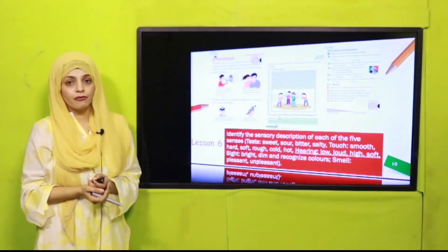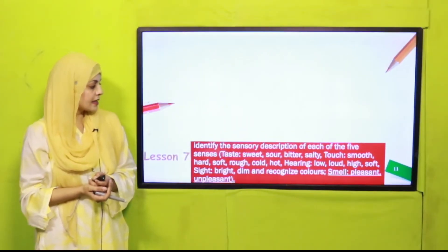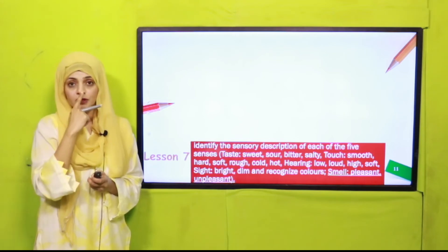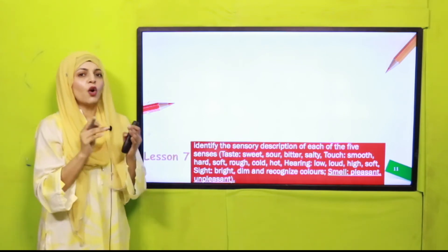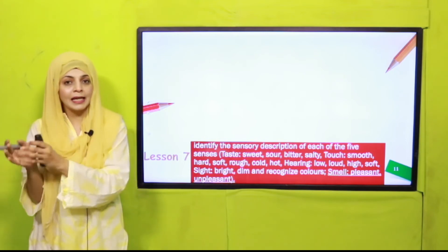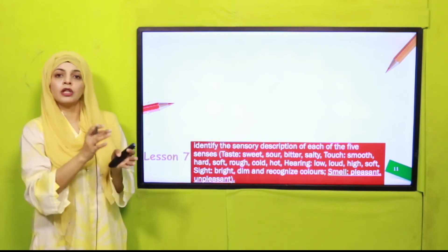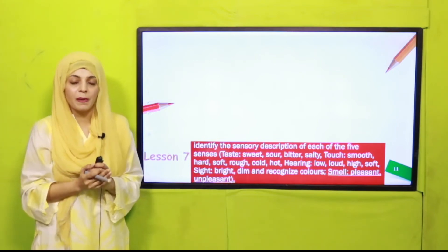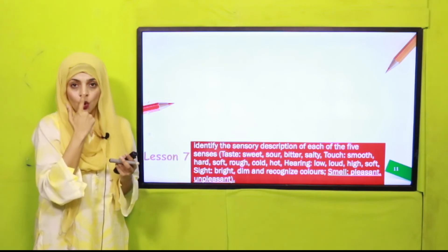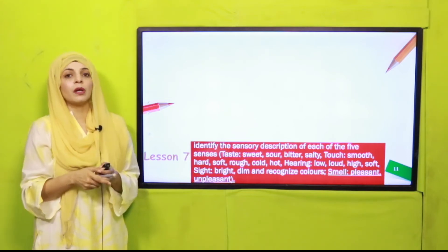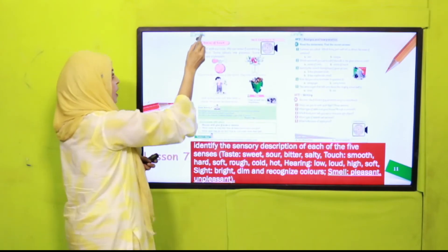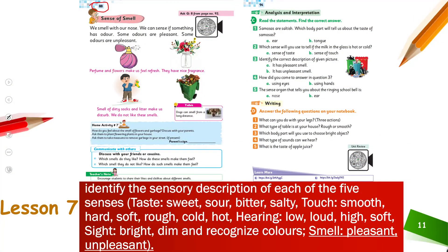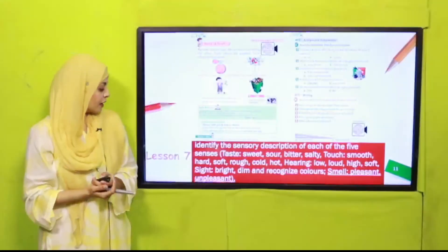Lesson Number Seven covers the sense of smell — which smells are pleasant and which are unpleasant. This sense is performed by your nose. The sense of smell will be discussed in Lesson Number Seven. Pages included are page number 88 and the practice page is page number 94.